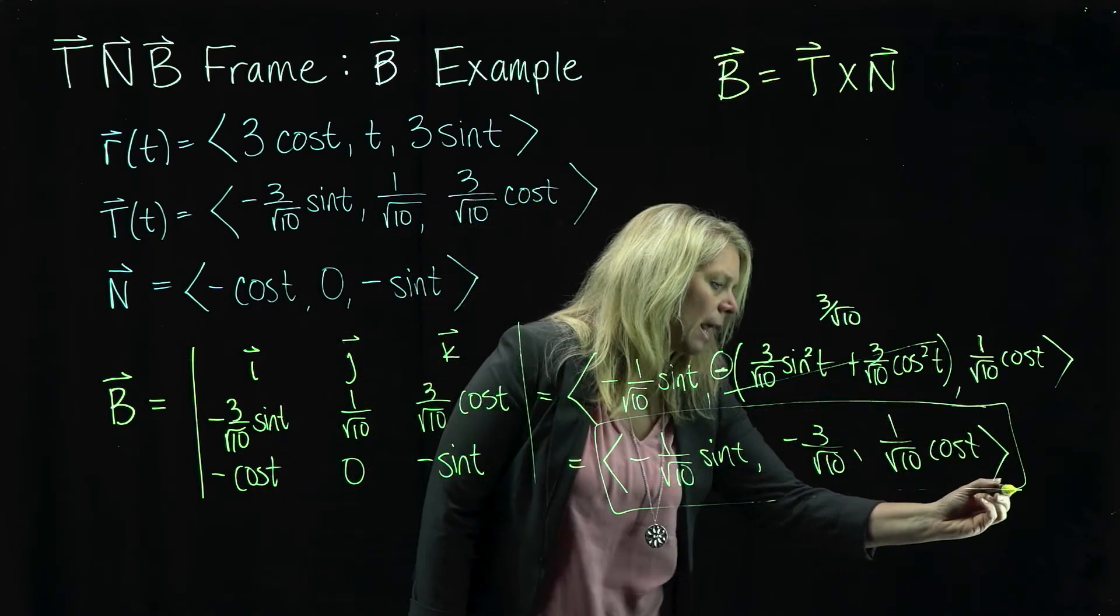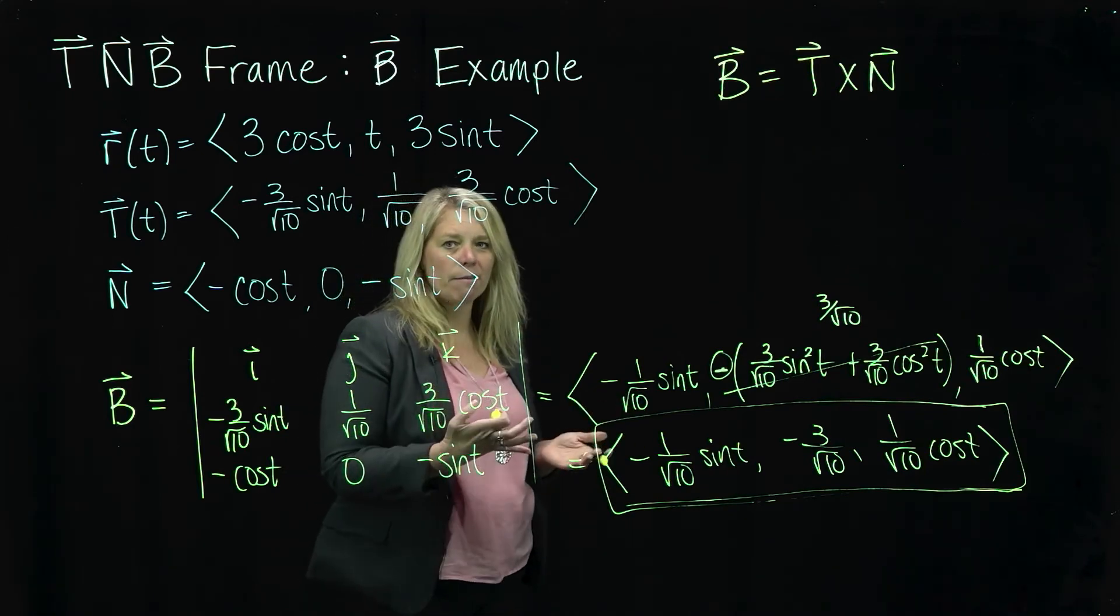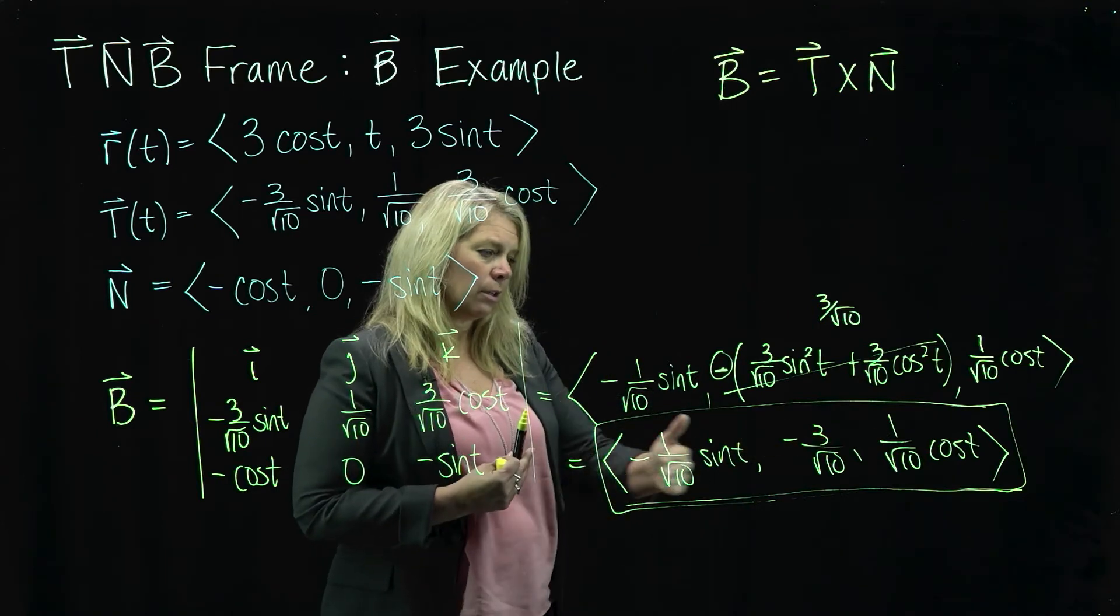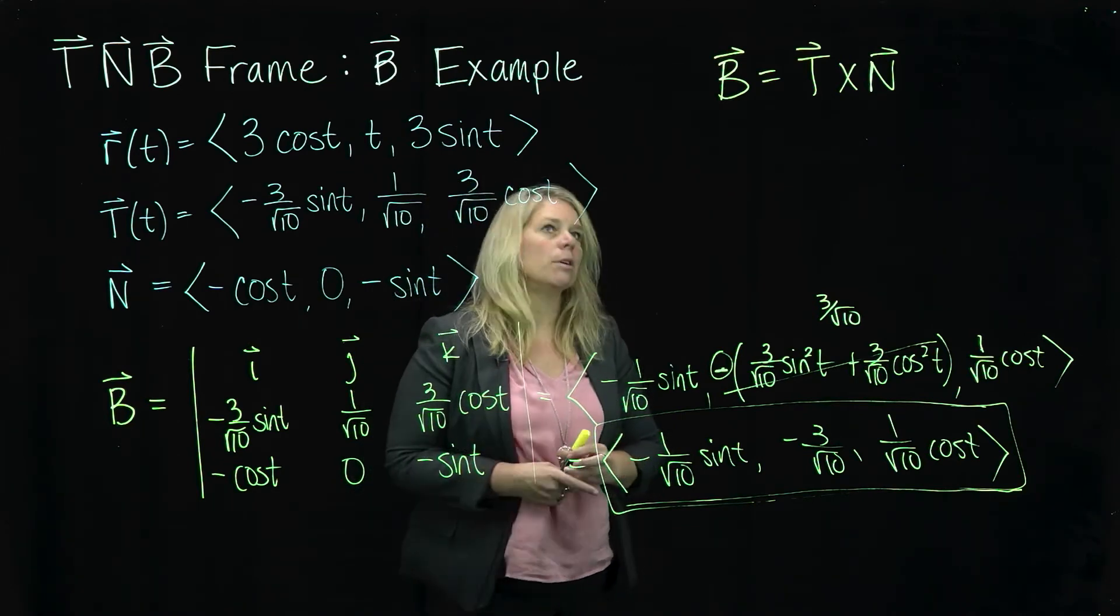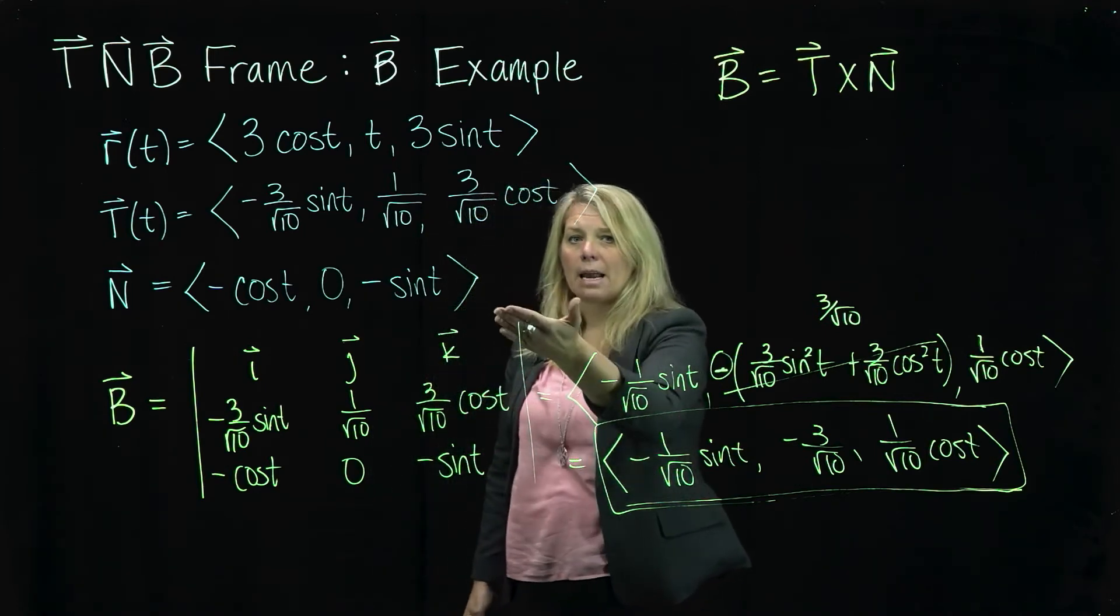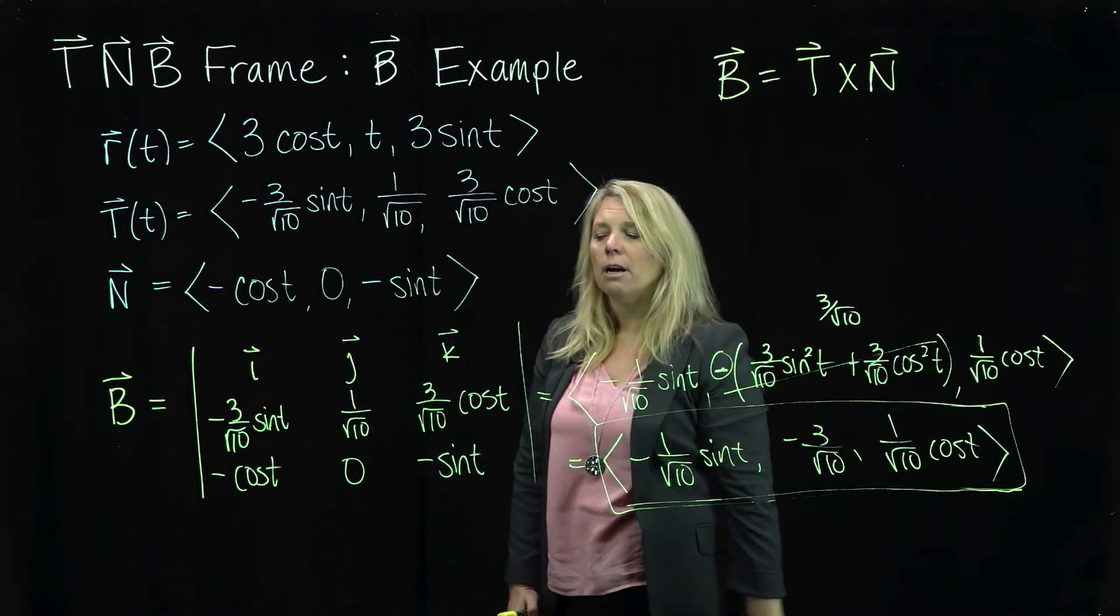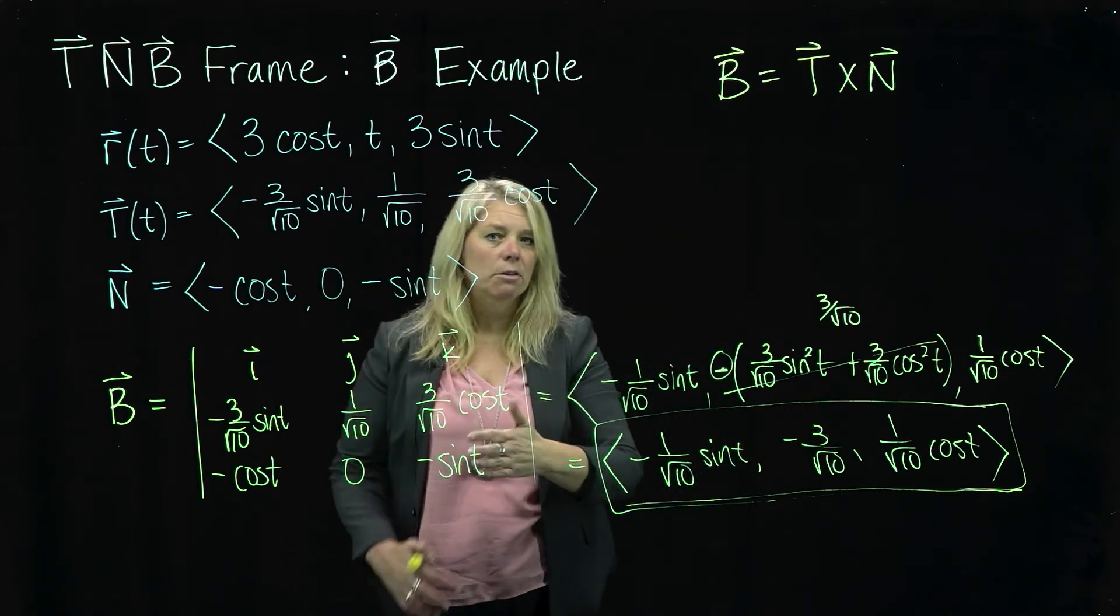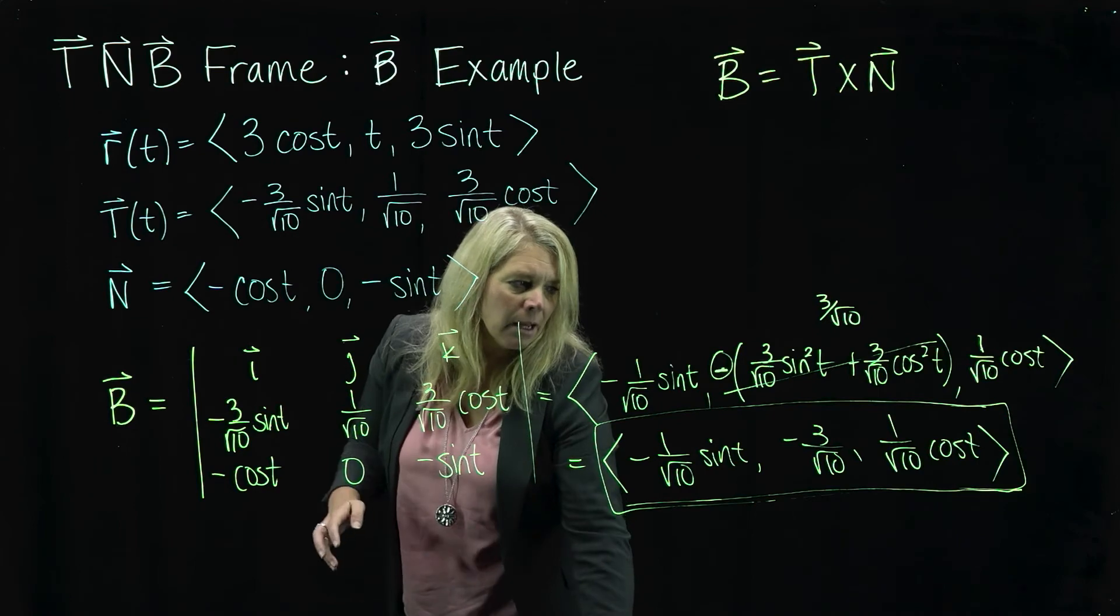Again, as we talked about with the N vector, if you have a moment on a test or some situation like that where you want to verify that your calculations make sense, you could verify that this is indeed a unit vector. So calculate the magnitude of that and verify that the magnitude of that vector is 1. And the other thing that should be true with this binormal vector is that it is perpendicular to both T and N. So you could verify that this B vector, when you dot product that with the T vector, you get 0. And also when you take the B vector and dot product that with the N vector, that you get 0. So that's not something that's necessary to do, but it's just kind of a check to make sure that your answer is a little bit reasonable.